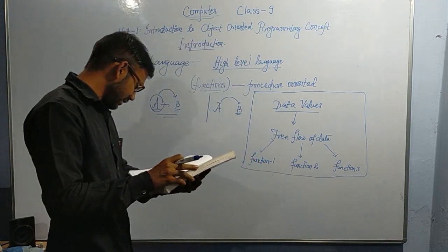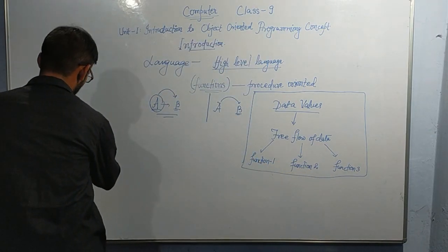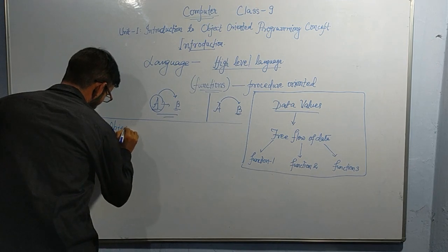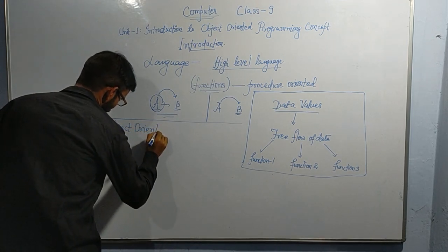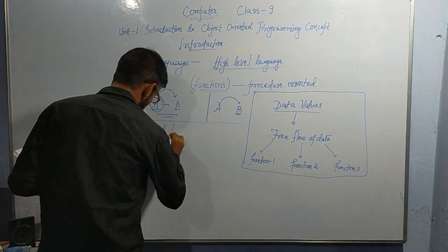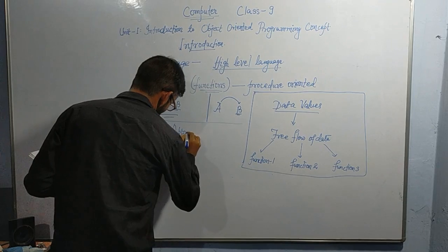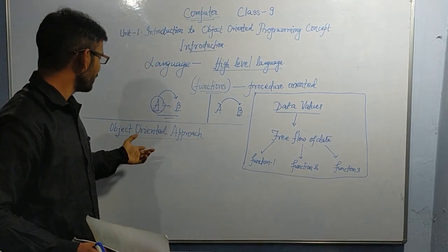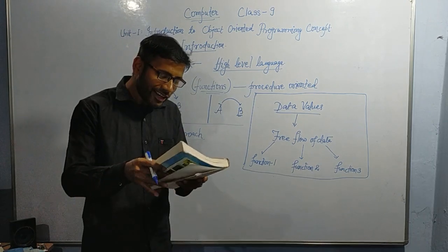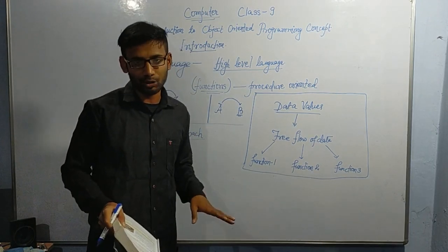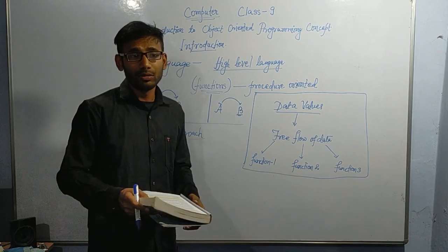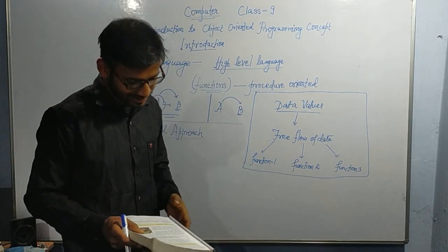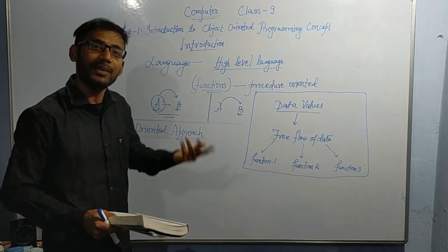Now coming to the object oriented approach. These are all approaches — there is no separate language called object oriented programming as such. These are approaches — a way via which a language can interact, via which a compiler can understand, and via which an interpreter can execute. So these are approaches rather than types of language.